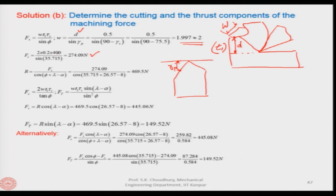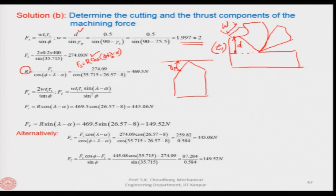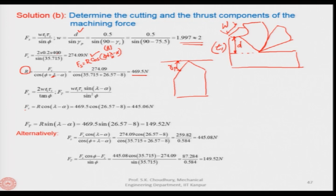If we know Fs, the resultant force R from merchant's can be found: Fs equals R times cos(phi + lambda − alpha). From R, we know the formulas for Fc and Ft: Fc equals R times cos(lambda − alpha), with R found, lambda = 26.57, and alpha = 8 degrees given, so Fc is obtained. Similarly, Ft equals R times sin(lambda − alpha), and all values are known so it can be found.